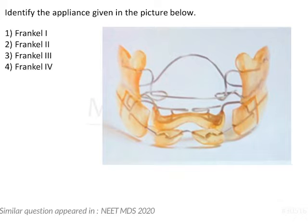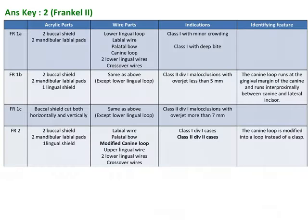Identification of a Frankel's appliance as an image-based question is very important and frequent because they want to test your knowledge about the various components of the appliance. The Frankel's appliance is very unique because it has various components — acrylic components like the buccal shields and lip pads — and various wire components, which can be very confusing. There is a very important table that covers the various components, indications, and different identifying features.